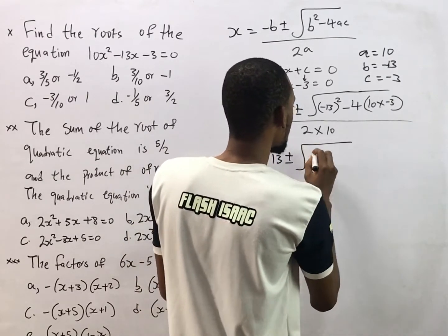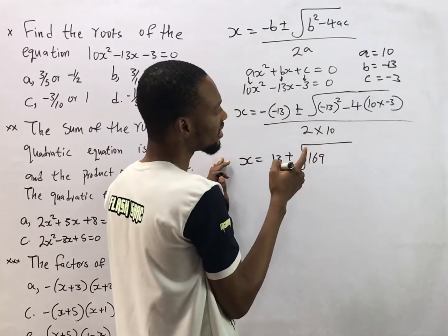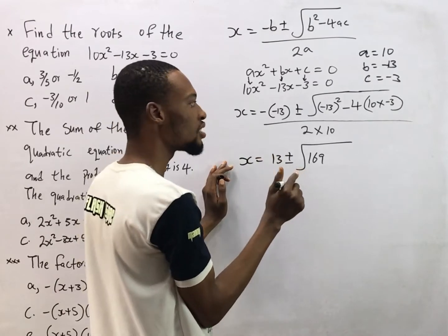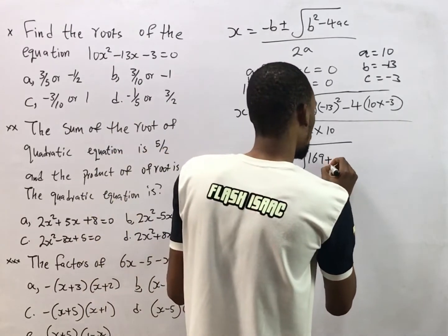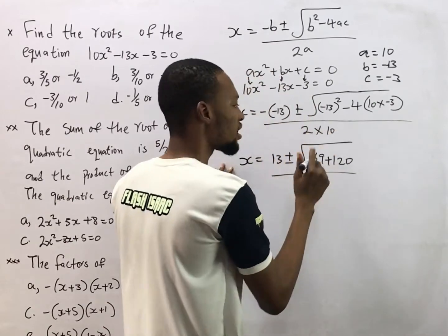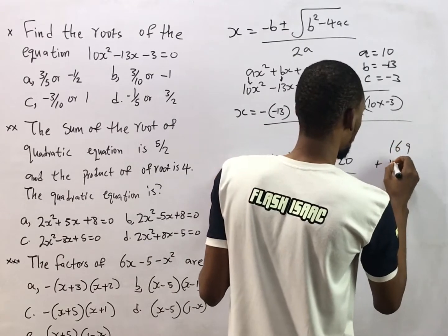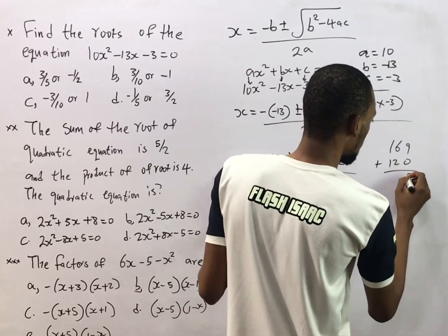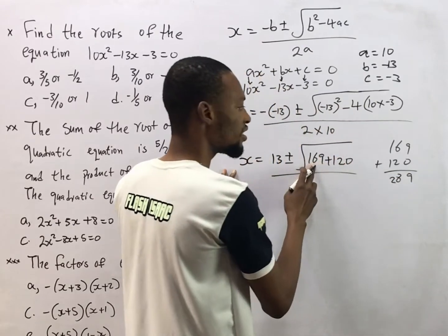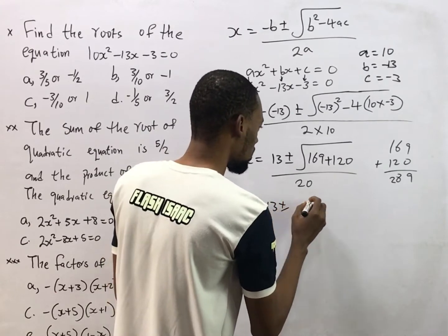So s equals negative negative 13, which is positive 13, plus or minus the square root of: negative 13 squared is 169, then minus 4 times 10 is minus 40, and minus 40 times minus 3 is plus 120. So inside the square root we have 169 plus 120, all over 2 times 10, which is 20.